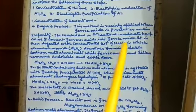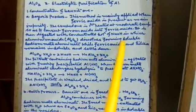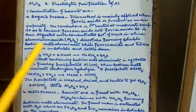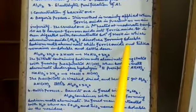It is then digested with concentrated solution of NaOH in which aluminum oxide, that is Al2O3, dissolves forming soluble sodium meta-aluminate while ferric oxide and silica remains insoluble and settle down. Al2O3·2H2O plus 2NaOH gives NaAlO2 plus 3H2O.